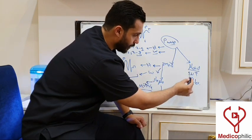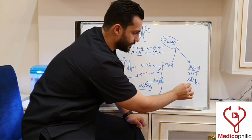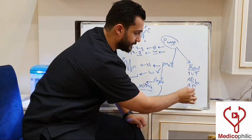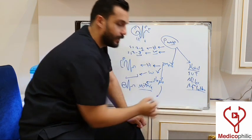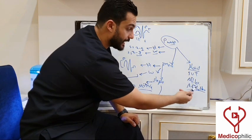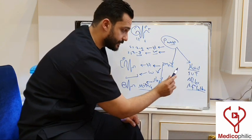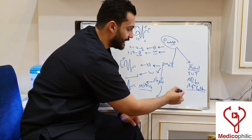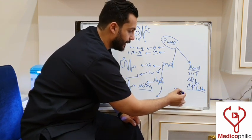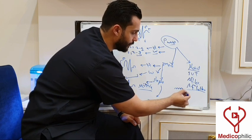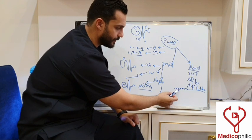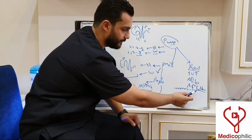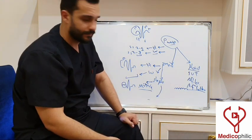Another cause for the absence of the P wave is atrial flutter. Atrial flutter is also a tachycardia, but it has a characteristic sawtooth appearance in the ECG, which indicates flutter.